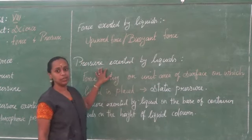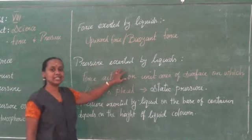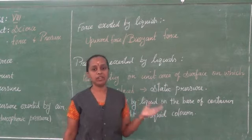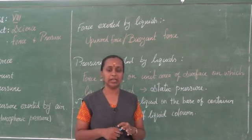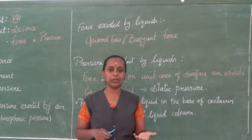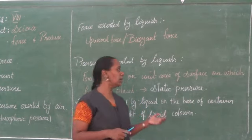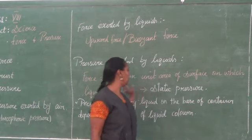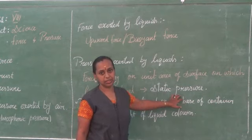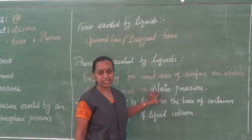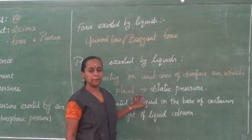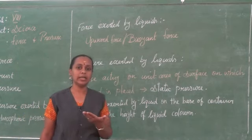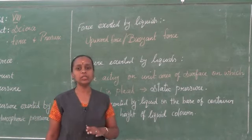Now the next we are going to learn is pressure exerted by liquids. We know that liquids do not have a definite shape — they take the shape of the container. If you pour water in a bottle, it takes the shape of the bottle. A force acting on unit area of a surface on which the liquid is placed is called static pressure.